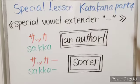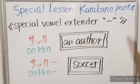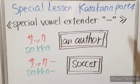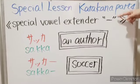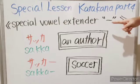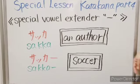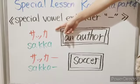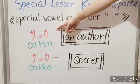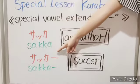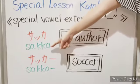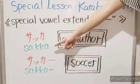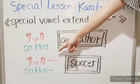Okay, finally, this is the last one. Let's learn a special vowel extender character. Katakana has a special vowel extender character. Let's take a look at some examples. 'Saka' means an author or a writer, but if you add the extender, you pronounce it 'sakaa.' And of course, 'sakaa' means soccer.